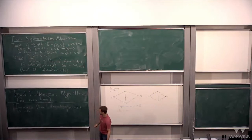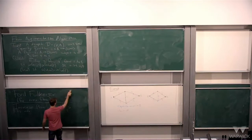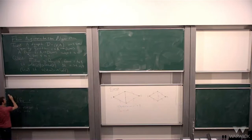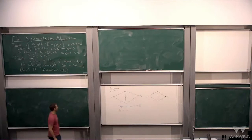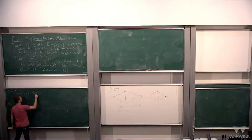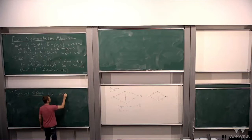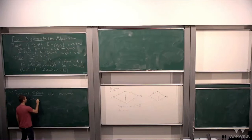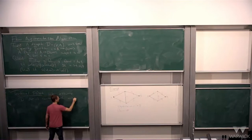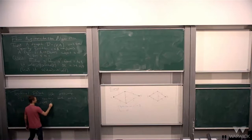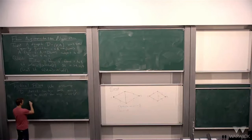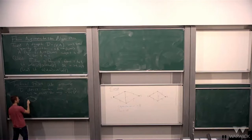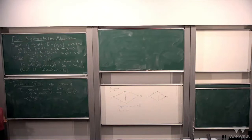Before presenting the algorithm, I need to make one technical point. We're going to assume that the digraph D does not contain both arcs uv and vu for any pair of vertices — we don't want the digraph to contain anything like this. But this doesn't technically change the problem at all.